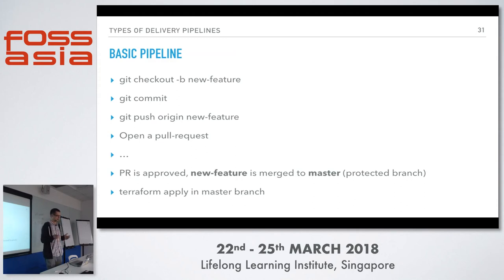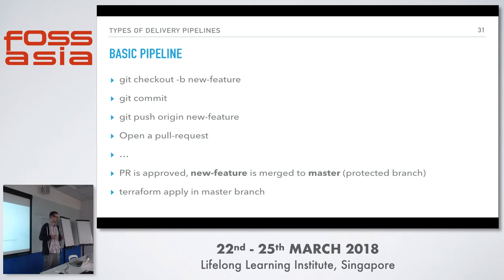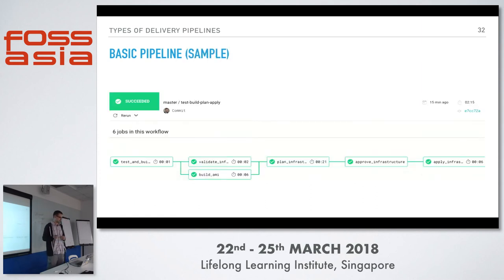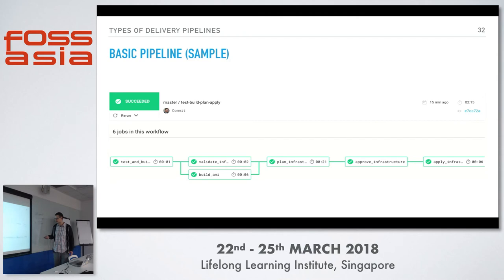A basic pipeline looks like this: you work on a feature branch, push code, open a pull request, get it approved, merge into master, and then execute Terraform apply on the master branch. Master contains a single source of truth for the code and infrastructure. A sample pipeline in CircleCI fetches code from GitHub, validates for syntax errors, runs Terraform plan, a human approves the change looks good, then it's applied. All of this is described as code — infrastructure as code, pipeline as code.